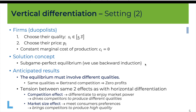As with horizontal product differentiation, we use the concept of subgame perfect Nash equilibrium, so we solve the game backwards. Starting from the price stage — the second stage — we want to see which prices the firms will choose for whatever combination of qualities they have chosen in the first stage. Once we know that, we move to the first stage and analyze the quality decisions, anticipating the effect that quality changes will have on the price equilibrium.